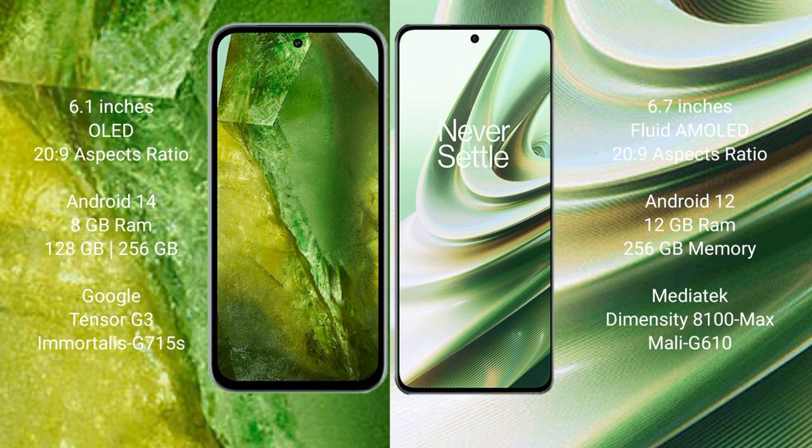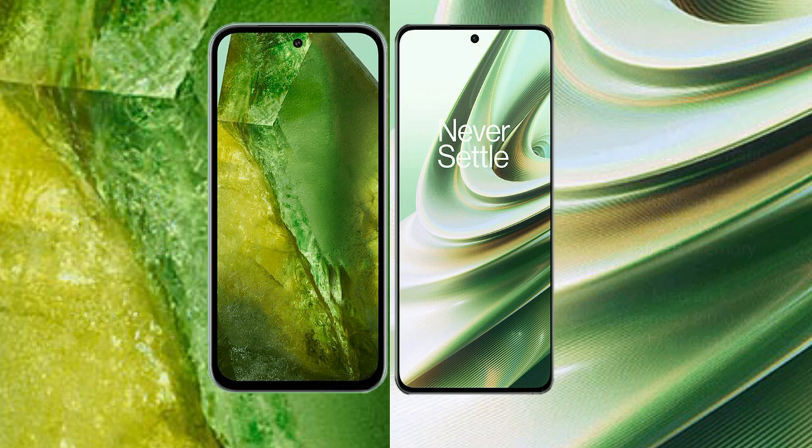Google Pixel 8a has 256GB internal storage, a Google Tensor G3 processor, and an Immortalis GPU. OnePlus 10R comes with 12GB RAM and 256GB internal storage, a MediaTek Dimensity 8100 Max processor, and a Mali-G610 GPU.